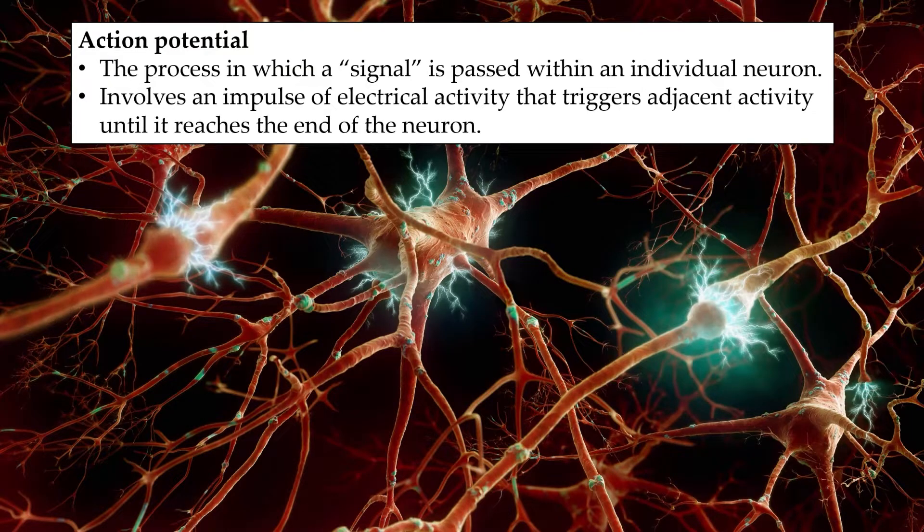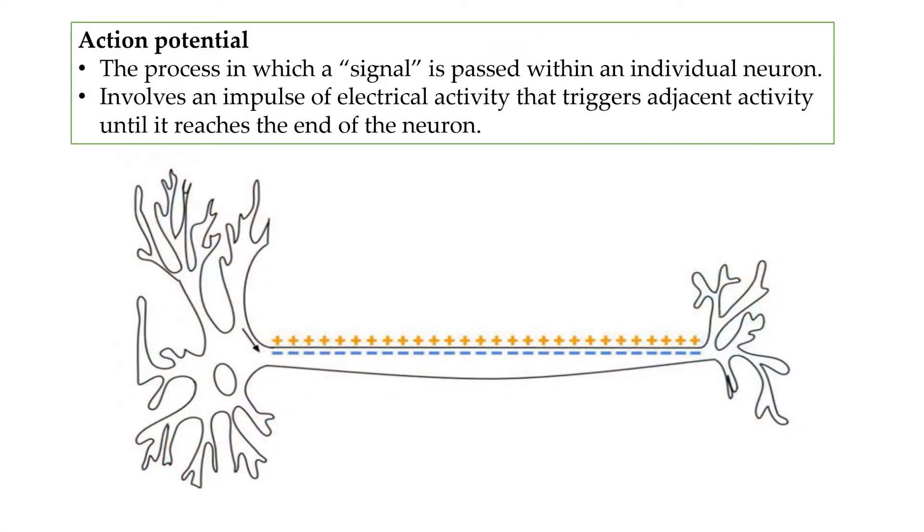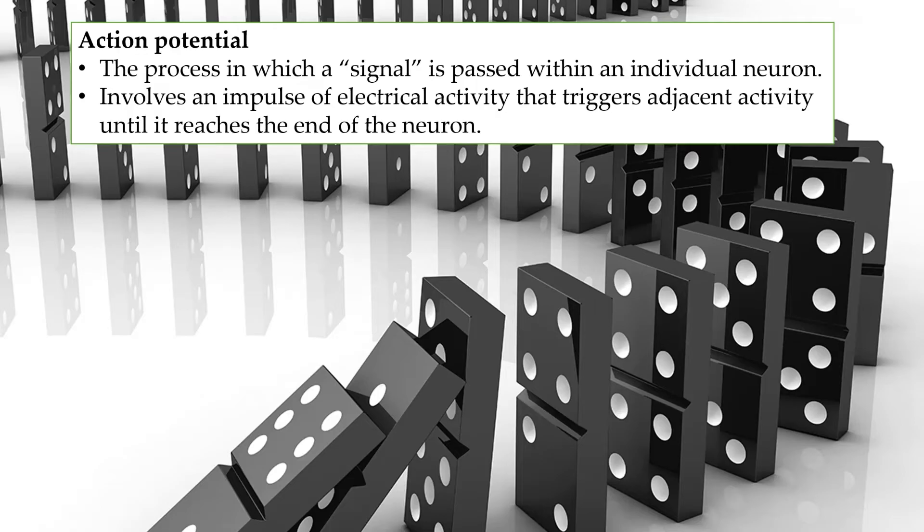In short, it involves a rapid electrical impulse, almost like an explosion occurring at one end that triggers the next section to activate and so on until the signal reaches the other end of the neuron. It's a cascade, very much like dominoes falling. But we're going to focus on what happens at the very end,